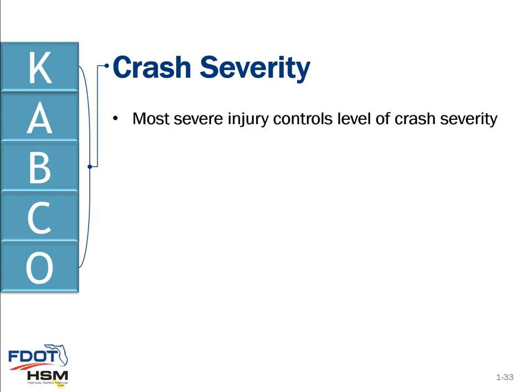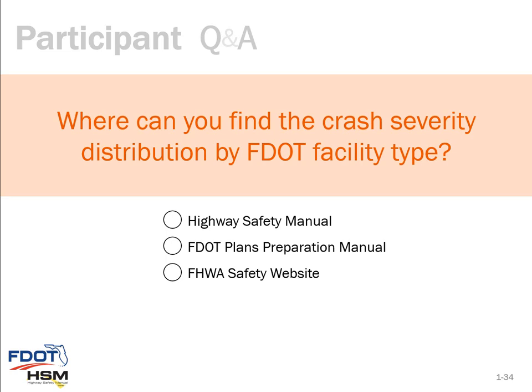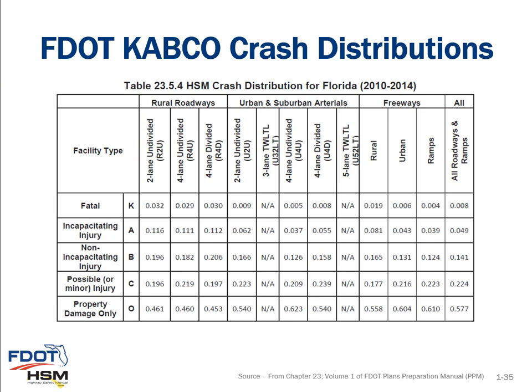In crash severity, the most severe injury that occurs at the crash controls the crash severity reported for that incident. The crash severity distribution by FDOT facility type is found in the FDOT Plans Preparation Manual — specifically Table 23.5.4, located in Chapter 23, Volume 1 — and is broken down by different facility types with the different KABCO crash distributions.